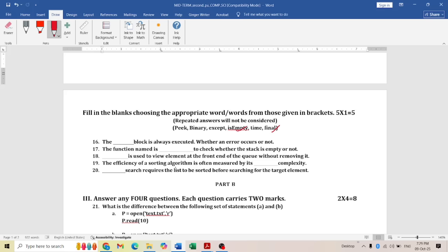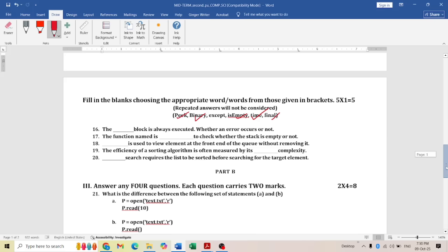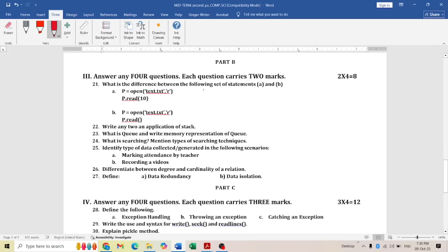Next question: dash is used to view the element at the front end of the queue without removing it. It is nothing but peek. Next: efficiency of a sorting algorithm is often measured by its time complexity. Next: the dash search requires the list to be sorted before searching the target element. Sorted means binary search. Okay, so these are the questions for the MCQ and fill in the blanks.